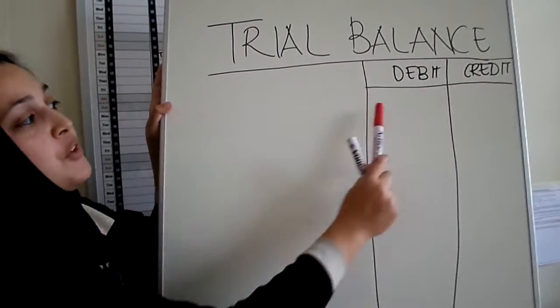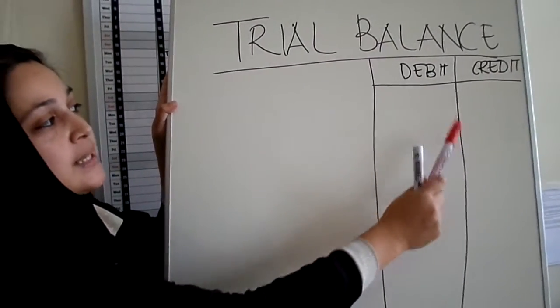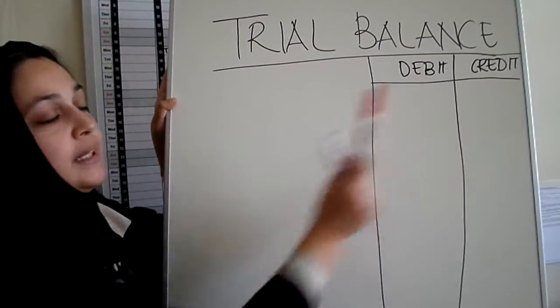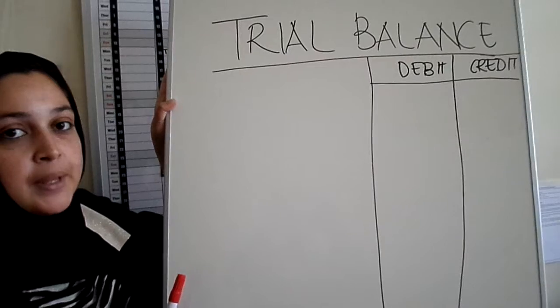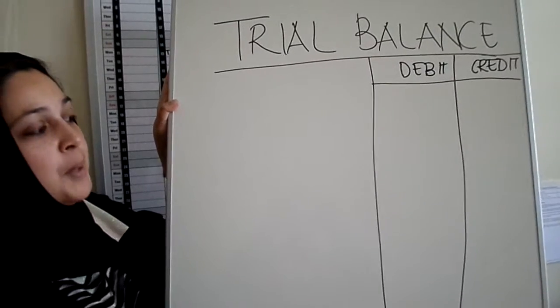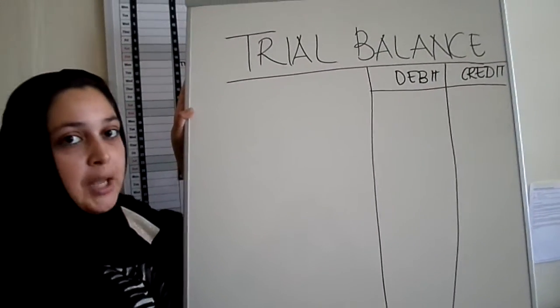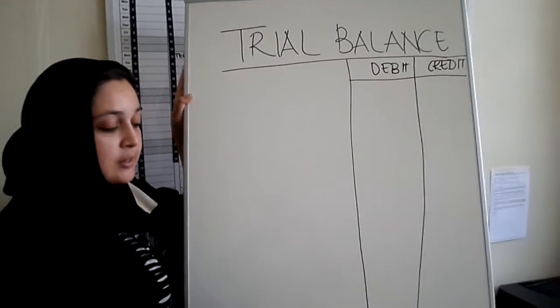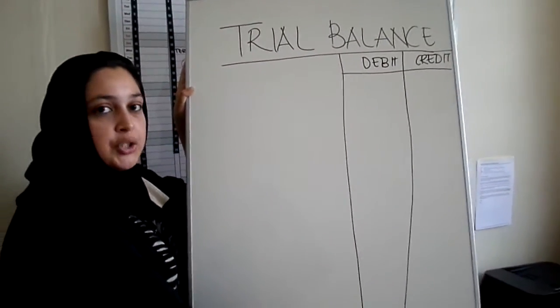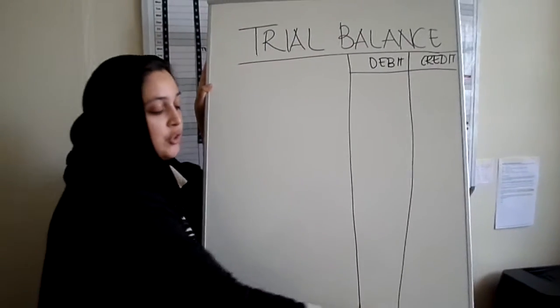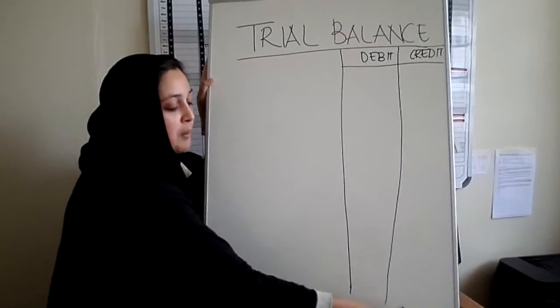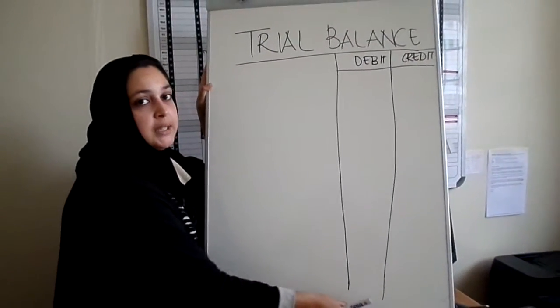You have a column on the right side for debit and credit, and right at the bottom of the trial balance, underneath your debit and credit columns, you should know that you need to have totals at the bottom, which are going to be equal.